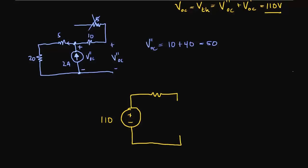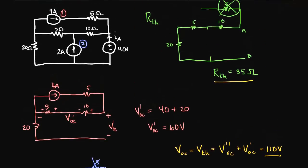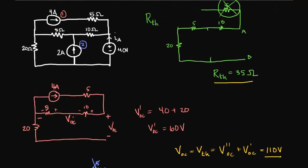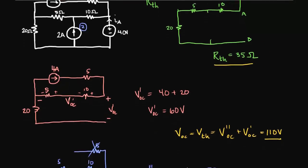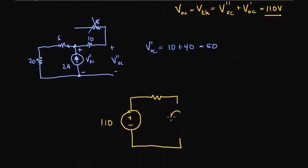And what is it we're putting in here? We're putting a 40 volt voltage source, and we're looking for IA.